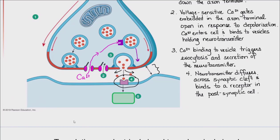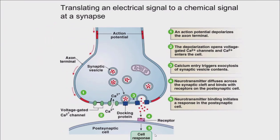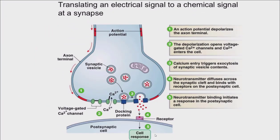Depending on what the receptor is, there will be some sort of response in the postsynaptic cell. That is step five — a somewhat unsatisfying answer that serves as a placeholder until we get a better look at what the receptor is. We're going to look at those receptors in just a moment, but first let me show you a very similar type of drawing with the same types of steps as confirmation.